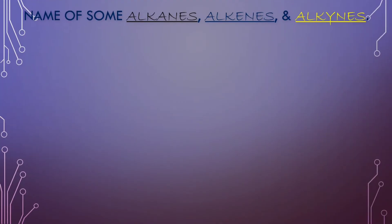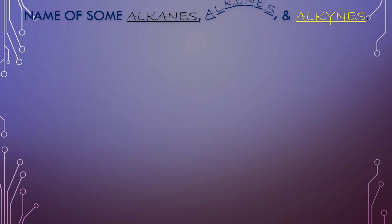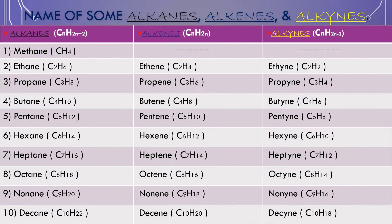Alkanes have the general formula CnH2n+2. The names of alkanes are: methane, ethane, propane, butane, pentane, hexane, heptane, octane, nonane, decane.